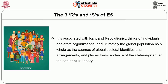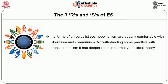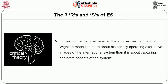World society, associated with Kant and revolutionism, thinks of individuals, non-state organizations and ultimately the global population as a whole as the sources of global societal identities and arrangements, and places transcendence of the state system at the center of IR theory. Its forms of universalist cosmopolitanism are equally comfortable with liberalism and communism. Notwithstanding some parallels with transnationalism, it has deeper roots in normative political theory. While disowning the ontology of states, this conceptualization cannot — because of its transnational element — privilege individuals as the only focus of inquiry. Critical theory does not define or exhaust all the approaches to it, and it is more about historically operating alternative images of the international system than about capturing non-state aspects.